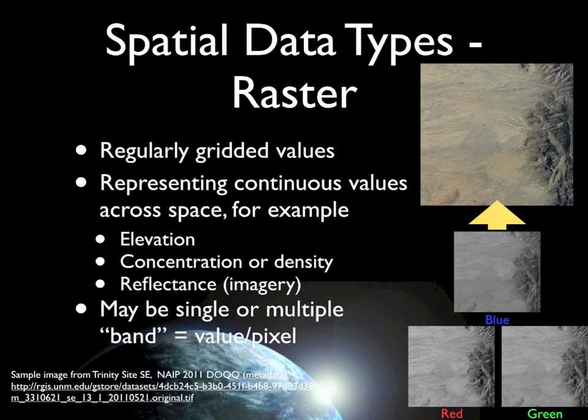Raster data are much more commonly used for representing the change of values across space. You might think of an elevation model as an illustration of a raster data set, or the changes in concentration or density of population, vegetation, particular plant or animal species — all representing a continuously changing value at regular intervals across space.